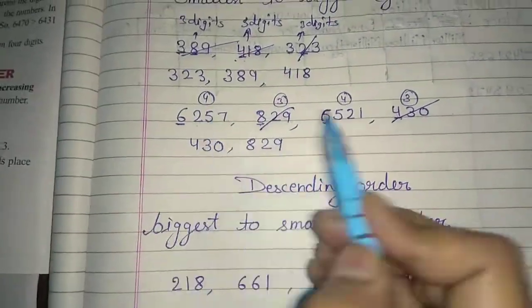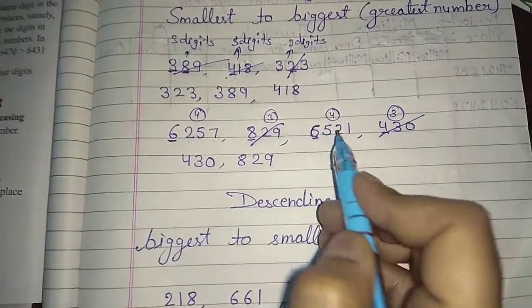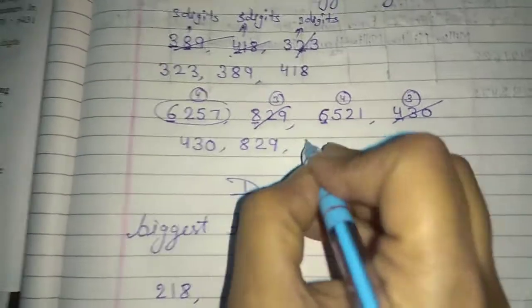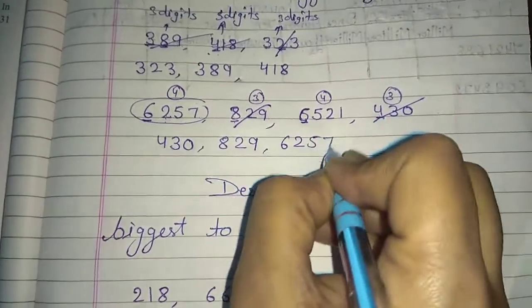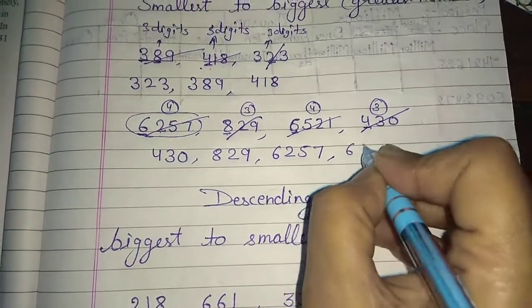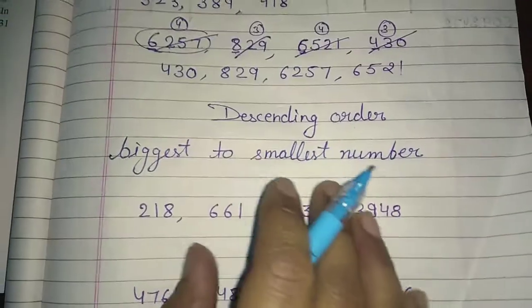Now it's 1000. So 6 and 6 are the same. So see the next number. 100. 2 and 5. So which number is the smallest? 2. So which number is the smallest number? 6257. And see the last remaining number? 6521. This order is ascending order.